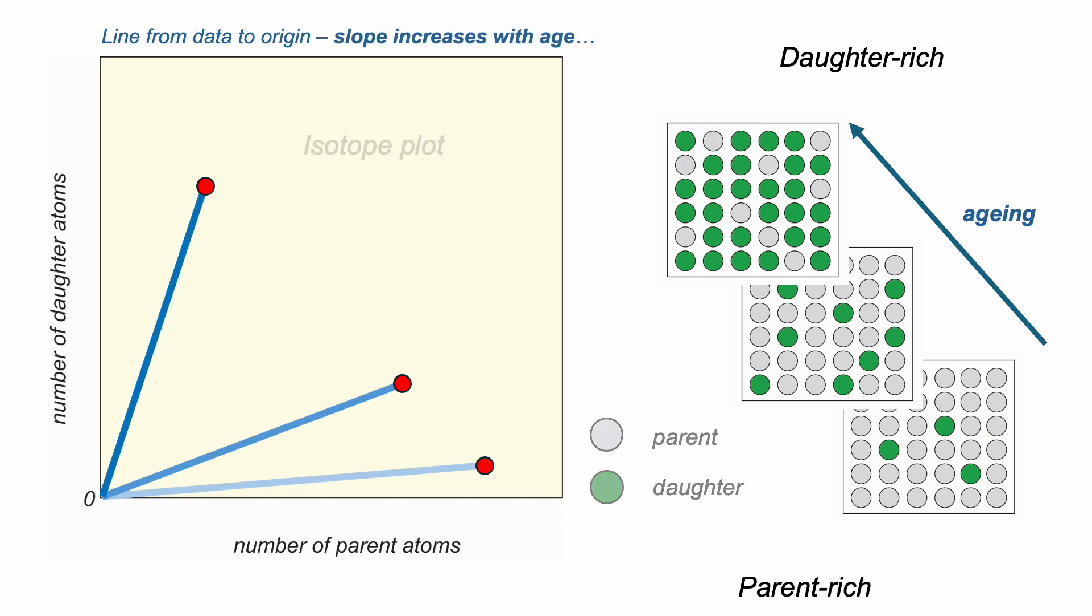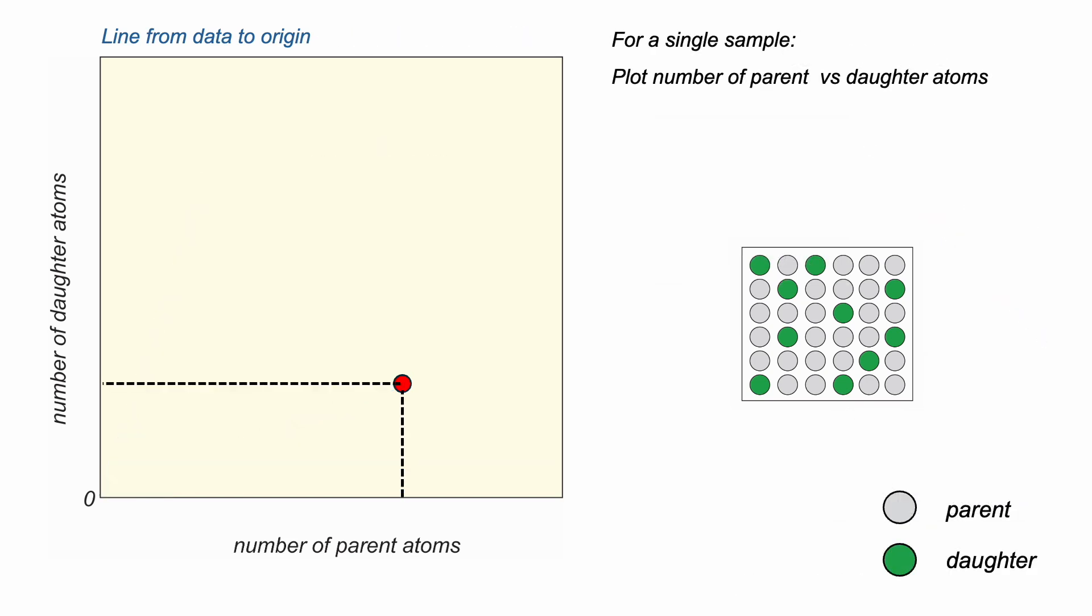This type of diagram is called an isotope plot. So measure the concentration of daughter versus parent isotope atoms, construct the tie line to the origin, and calculate the slope given the decay constant of a specific parent isotope. But this is using only one data point, so as an approach it's hard to assess its accuracy. So we need something better, which brings us to isochrons.